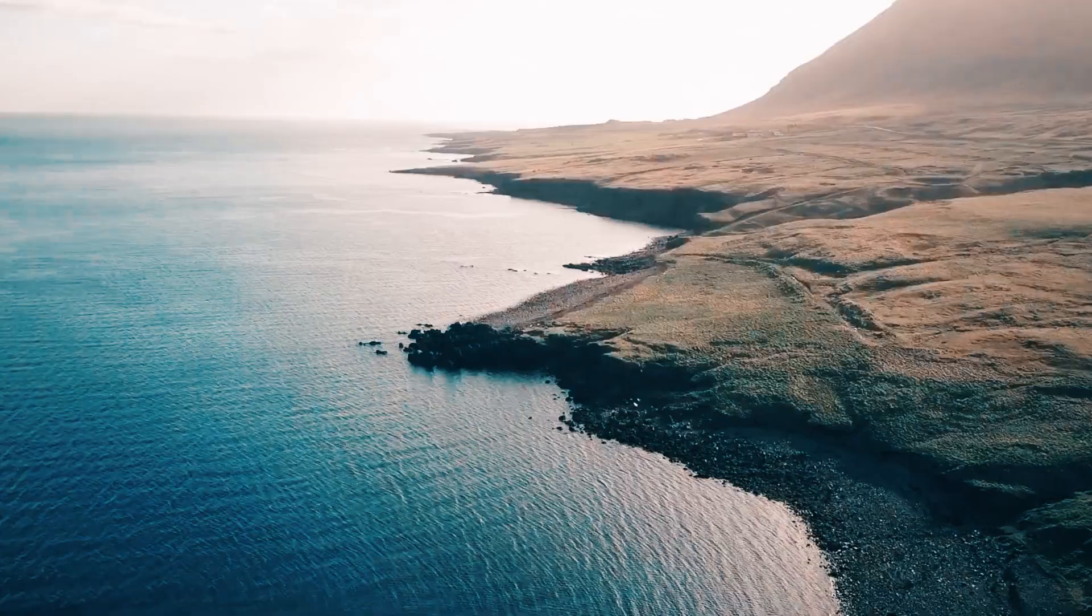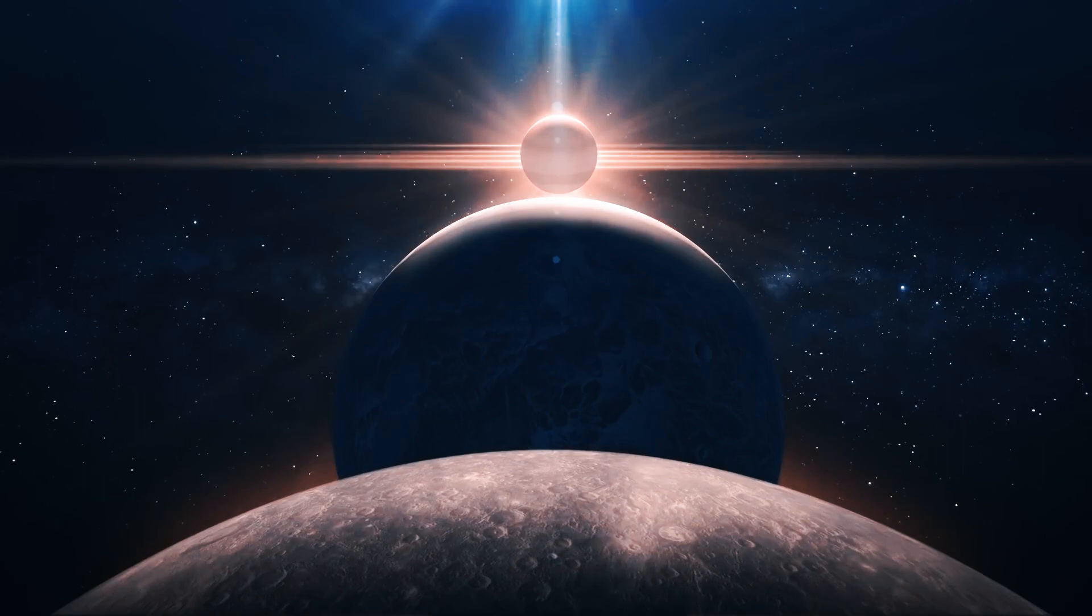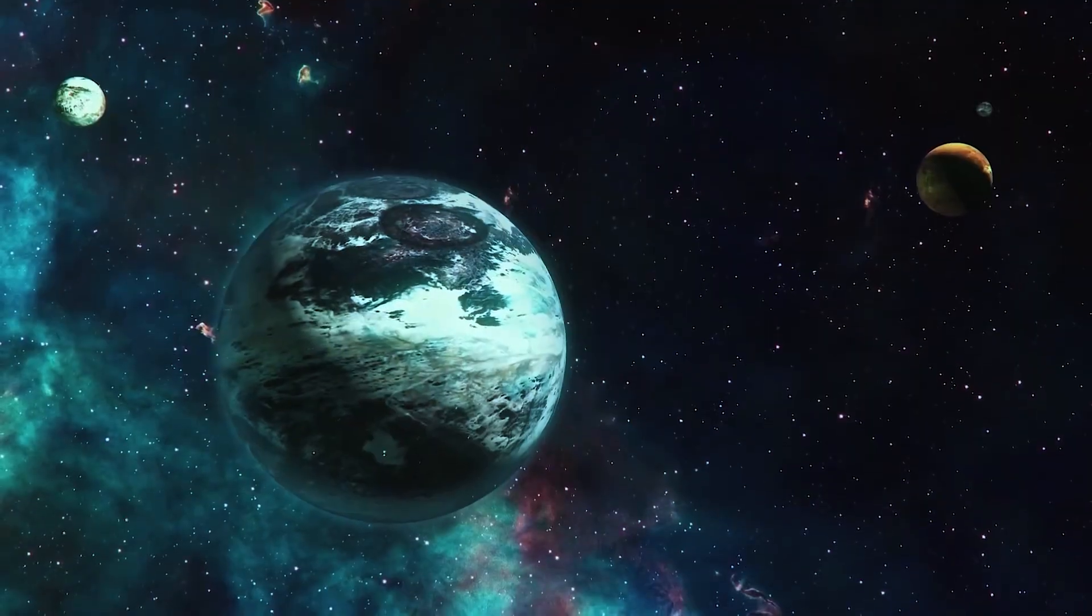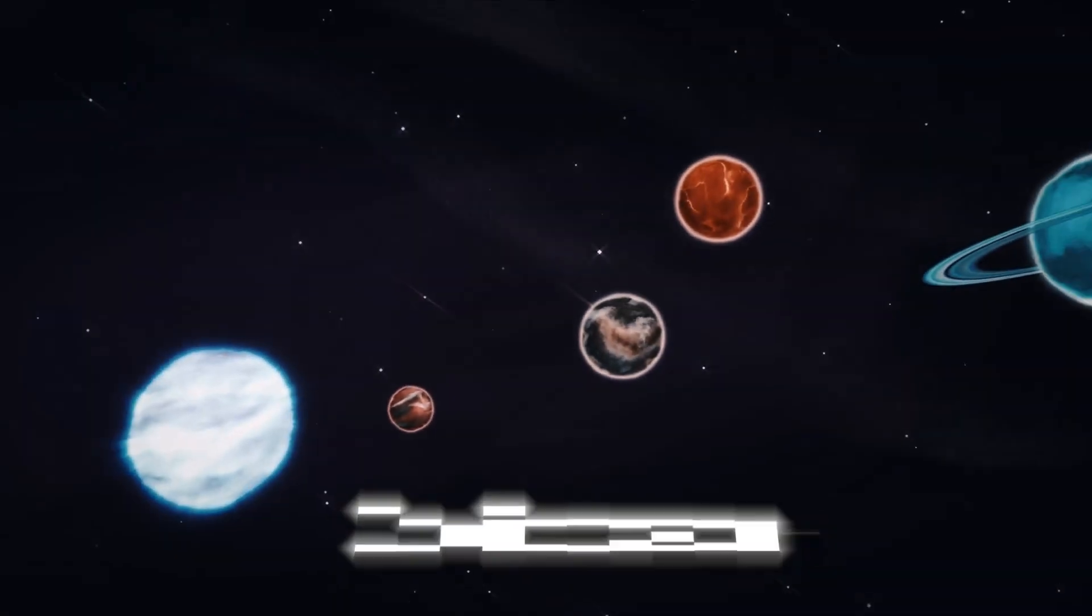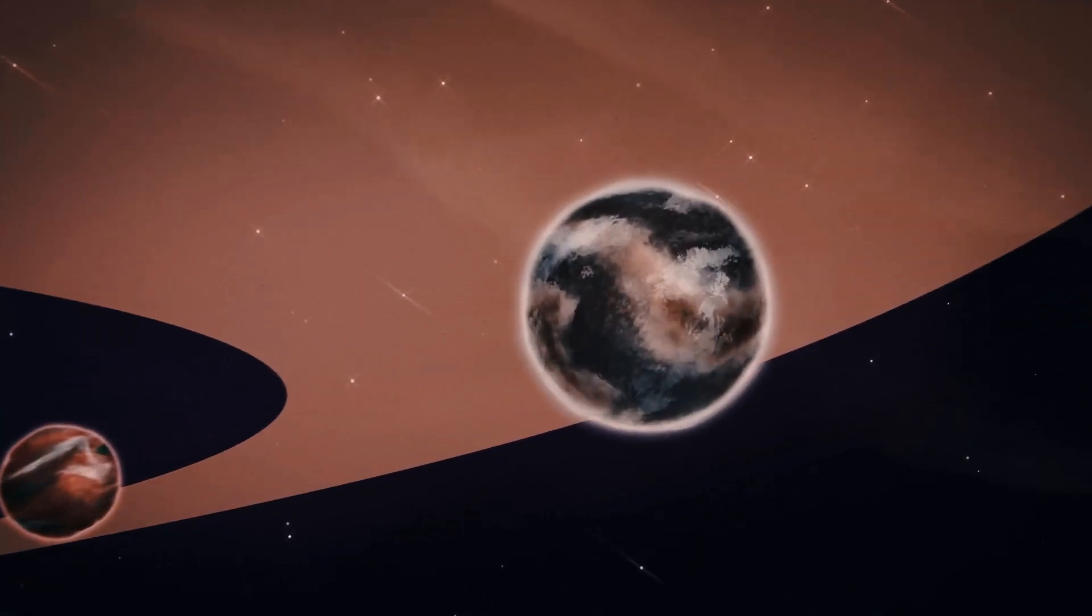On Earth, everywhere we find water we find life, so it seems natural to search where liquid water is present. Watery planets can be found in Goldilocks zone where the temperature is not too hot or too cold, it means the habitable zone.